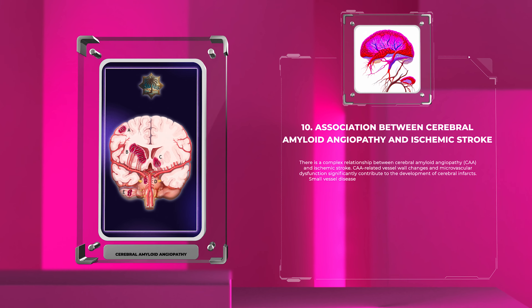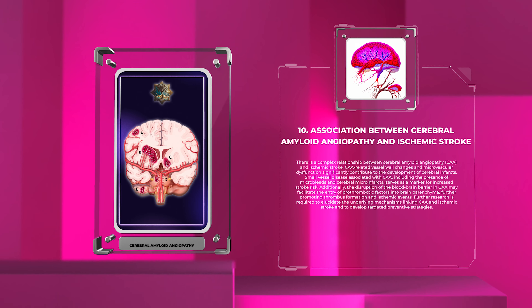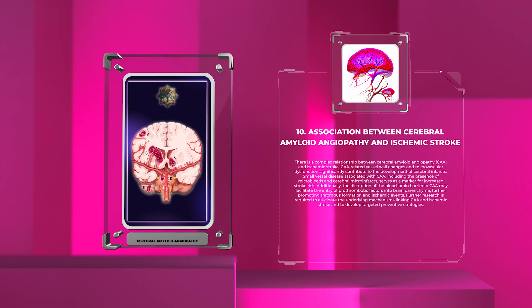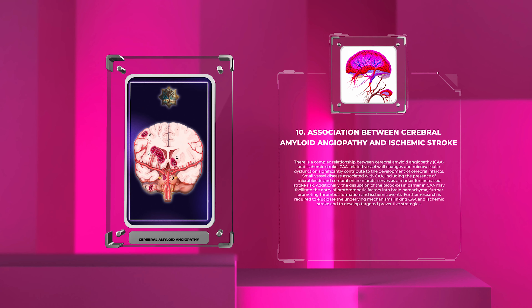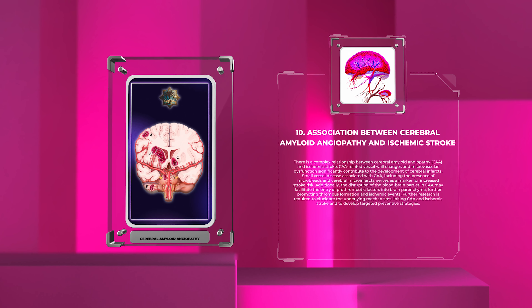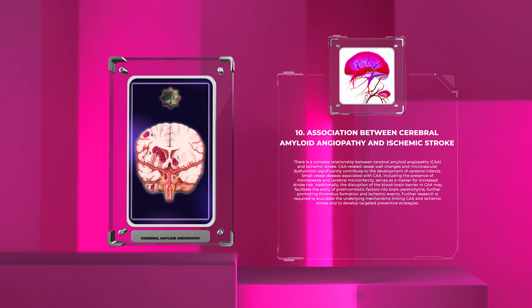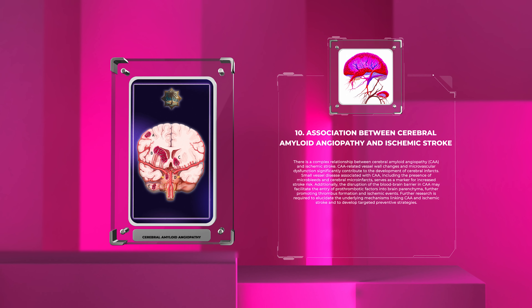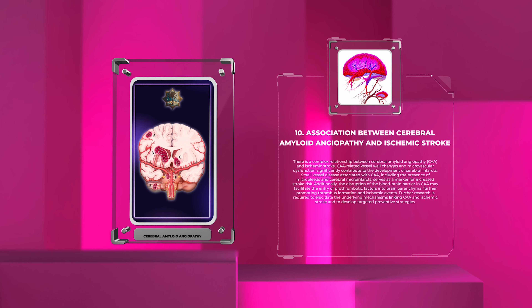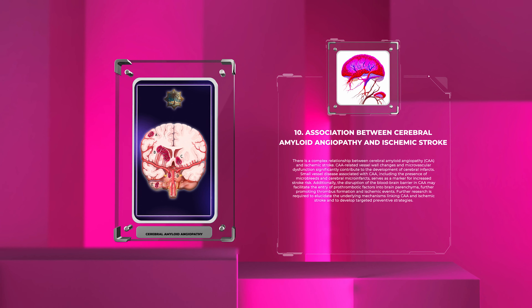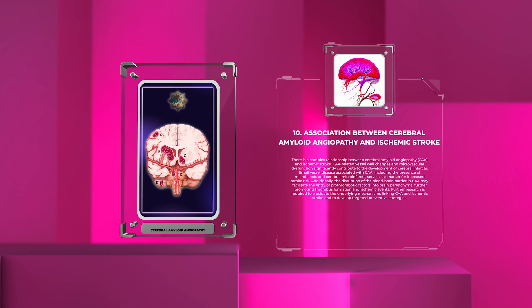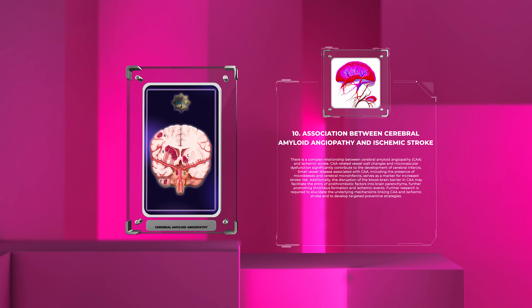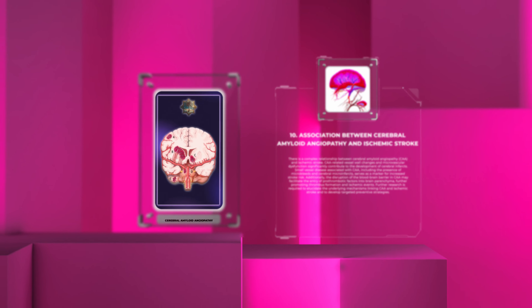There is a complex relationship between cerebral amyloid angiopathy, CAA, and ischemic stroke. CAA-related vessel wall changes and microvascular dysfunction significantly contribute to the development of cerebral infarcts. Small vessel disease associated with CAA, including the presence of microbleeds and cerebral microinfarcts, serves as a marker for increased stroke risk. Additionally, the disruption of the blood-brain barrier in CAA may facilitate the entry of prothrombotic factors into brain parenchyma, further promoting thrombus formation and ischemic events. Further research is required to elucidate the underlying mechanisms linking CAA and ischemic stroke and to develop targeted preventive strategies.